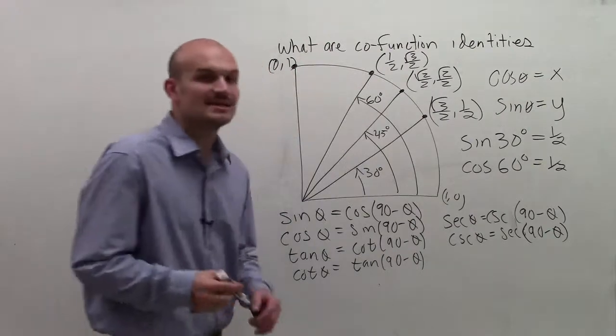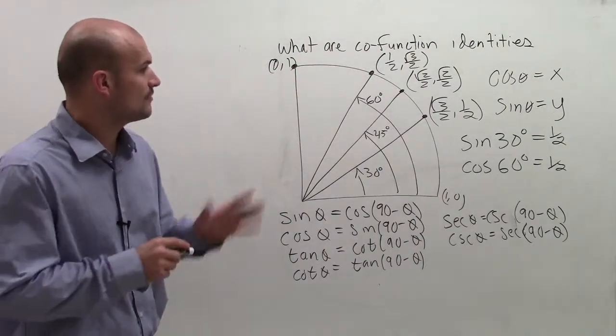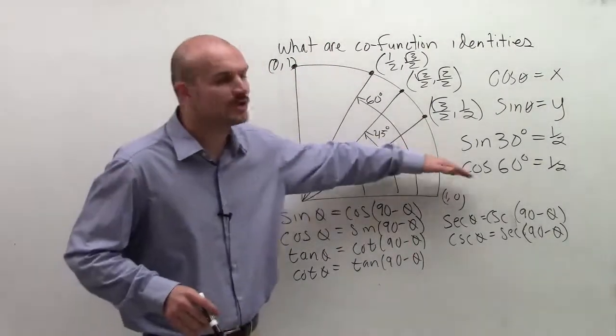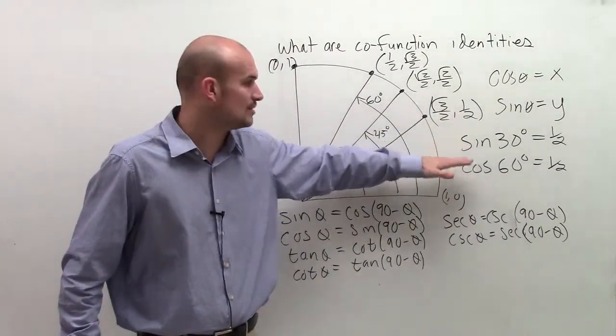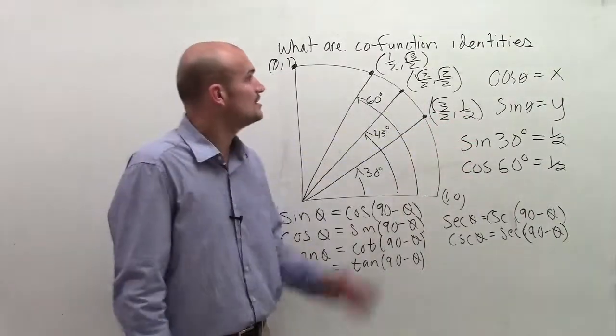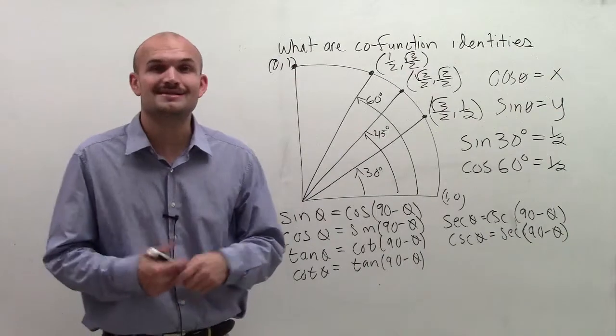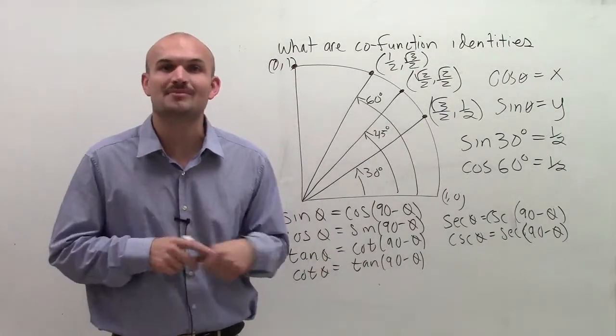So co-function identities are very, very powerful. They're very helpful for us to be able to work between two different angles and their values. So ladies and gentlemen, there's co-function identities. If you have any questions, please make sure you comment down below. So thanks for watching.